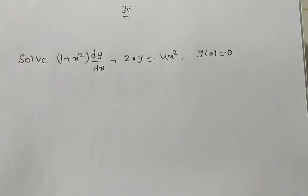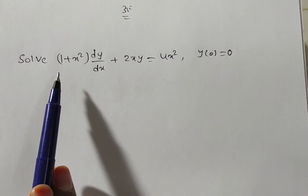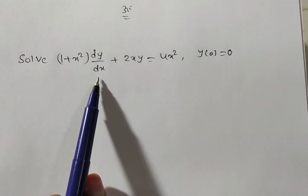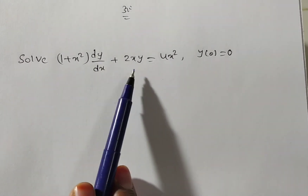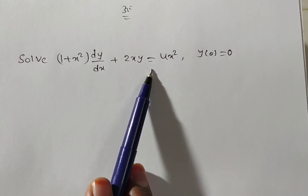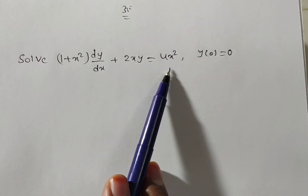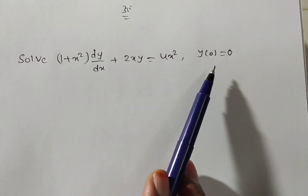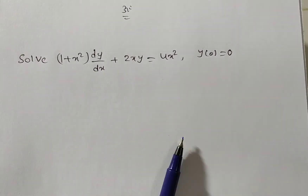Hi friends, now we are solving a problem on differential equation. The given problem is: solve (1 + x²) dy/dx + 2xy = 4x², and y(0) = 0.